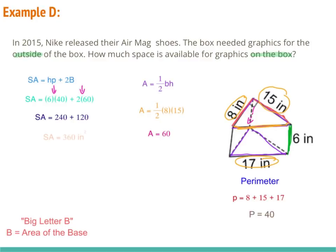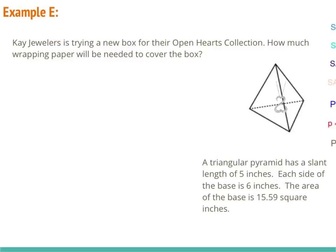At example E, K Jewelers is trying a new box for their Open Hearts collection — how much wrapping paper will be needed to cover the box? Since they're talking about wrapping paper to cover the box, we're talking about surface area. Since all sides come to a point at the top, we're talking about a pyramid. The surface area formula for a pyramid is SA equals one-half L times P plus big B, where L is the slant length, P is the perimeter of the base, and big B is the area of the base.